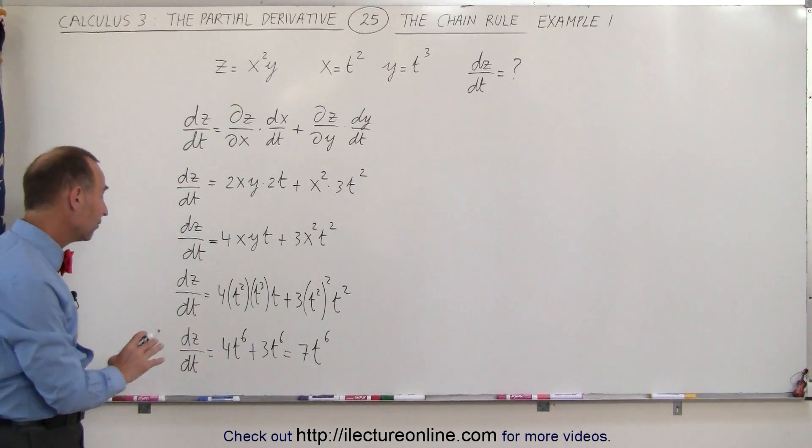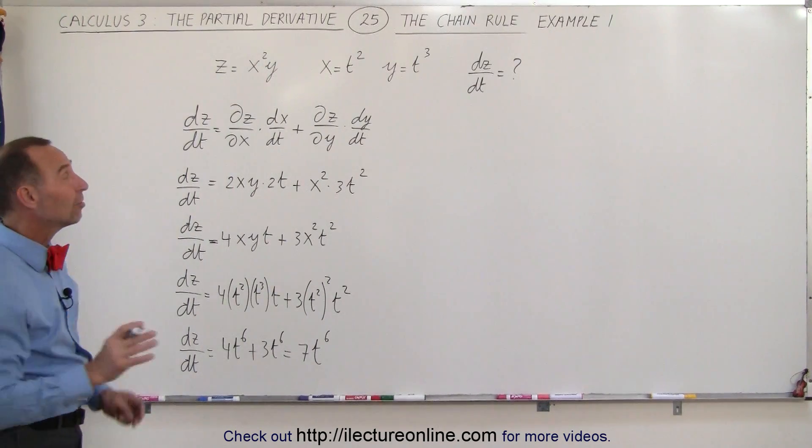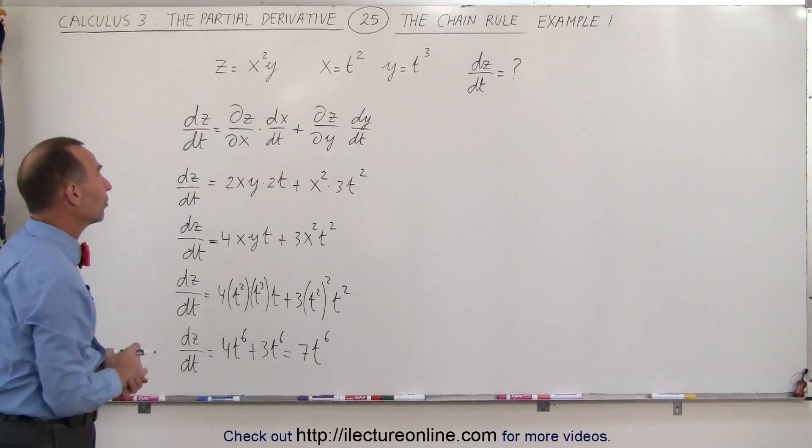Now that's the derivative of the function z with respect to time. Now let's do this another way to see that this is actually correct.